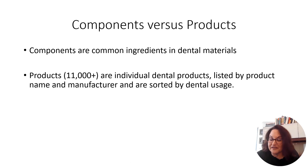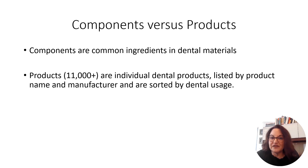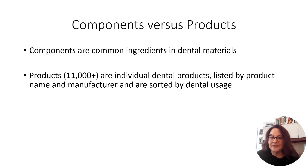Our report has two parts: components and products. Components, of which there are 78, are common ingredients in dental materials. The product database, of which there are over 11,000 at this time, are individual dental products listed by product name and manufacturer, and are sorted by dental usage.